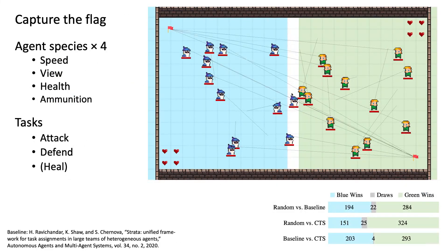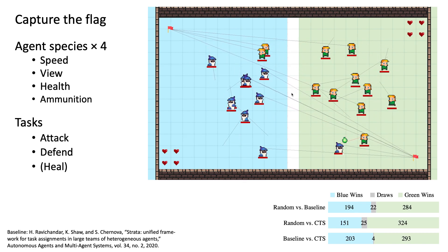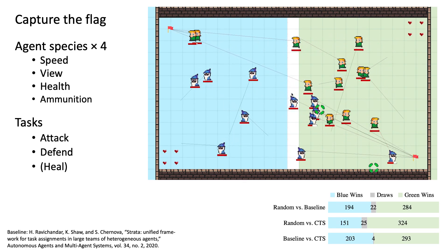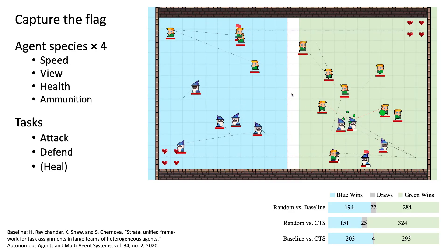To show our framework is generalizable, we apply it to a distinct example. In this Capture the Flag game, there are four agent species with different speed, view, health, and ammunition, and two tasks include attack and defend.